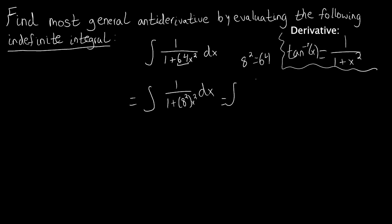So we have the integral of 1 over 1 plus (8x) squared. If we unpack this and do 8x times 8x, we get back 64x squared — so all the work we've done so far is valid. We've rewritten the integral in a form that fits the pattern, meaning the antiderivative of something that looks like this is tangent inverse of the thing being squared. So we might guess the antiderivative is tangent inverse of 8x plus C — but let's go ahead and check it.